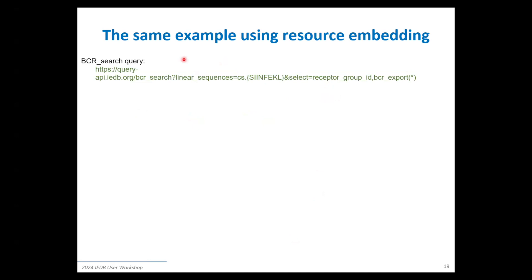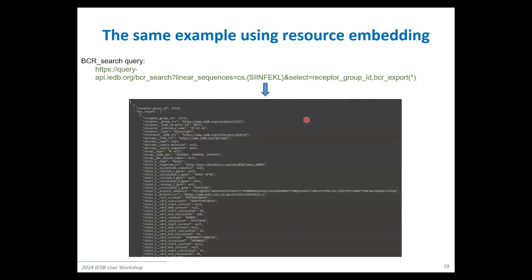Here's an example using resource embedding — a more powerful and advanced PostgREST feature. Because searches and exports are directly linked on that identifier, you can use resource embedding to say: do my search with these parameters, and also return everything from the BCR export — indicated by this wildcard. It all comes back in a single API call.